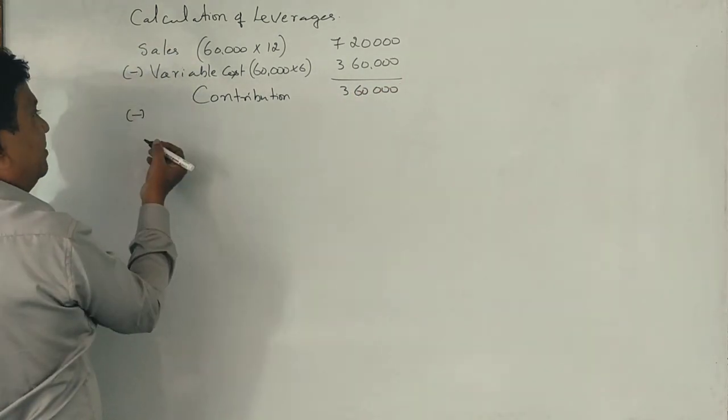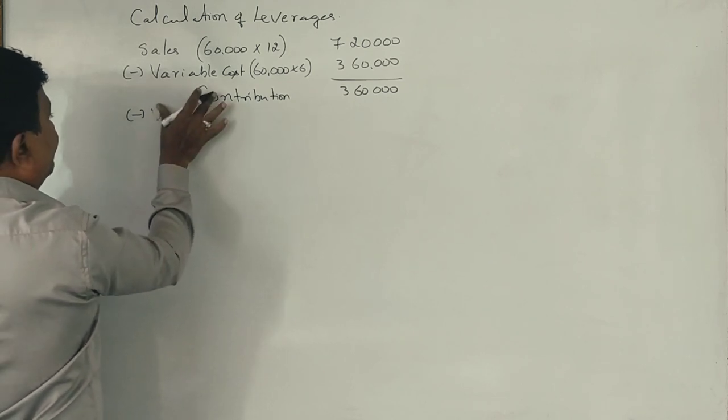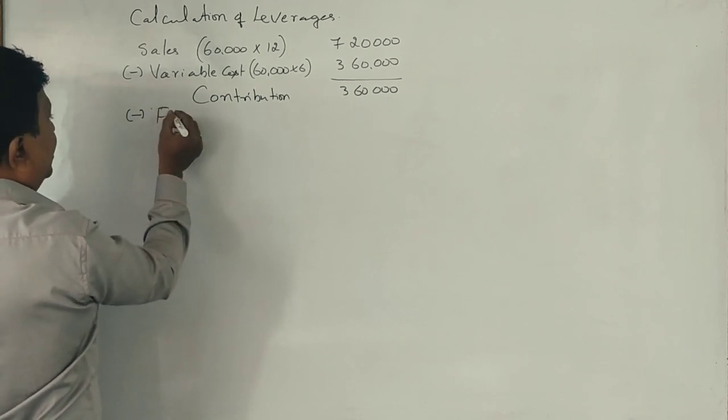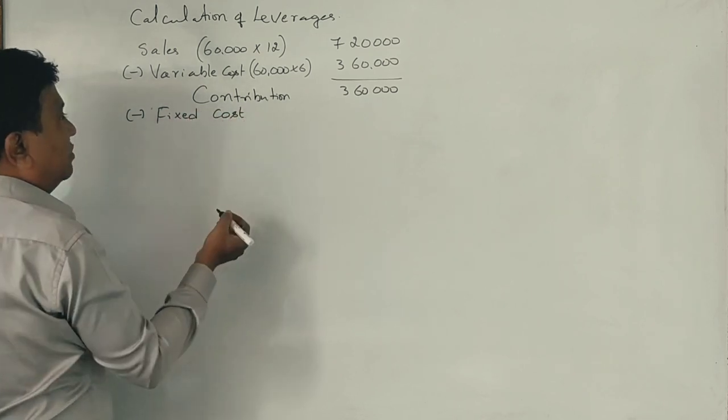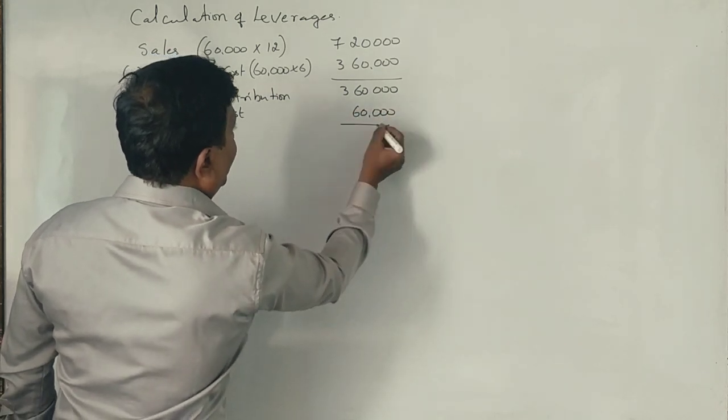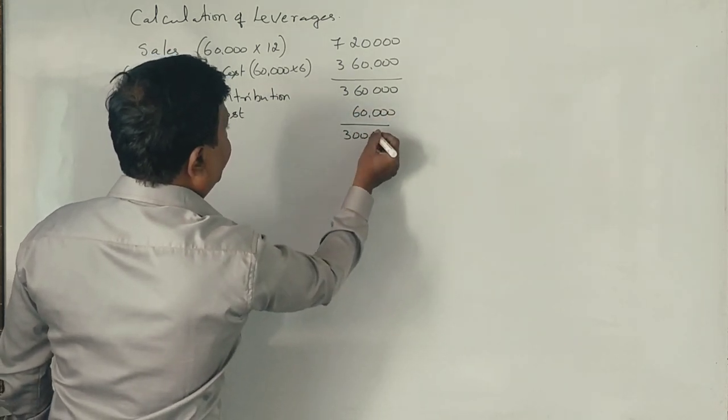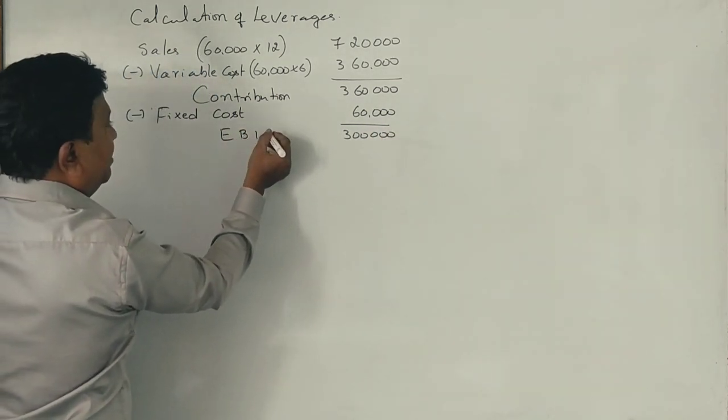From this contribution, if you deduct fixed cost. What is the fixed cost? 60,000 rupees. And you have 3,00,000 rupees of EBIT. Am I right? Yes, sir. EBIT.